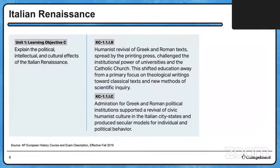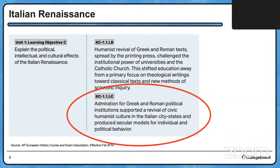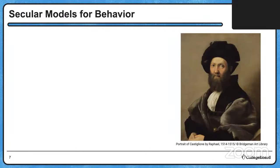Another historical development is that admiration for Greek and Roman political institutions supported a revival of civic humanist culture in the Italian city-states and produced secular models for individual and political behavior. For much of the Renaissance, the powerful Medici family ruled Florence from behind the scenes. Before we get into examples, this is a portrait by Raphael, which we'll discuss shortly. And I want to note: Todd and I are not going to cover all topics from every unit — we're hitting highlights. There are AP Daily videos you can go back to for more thorough review.